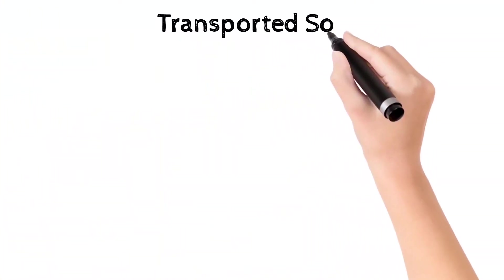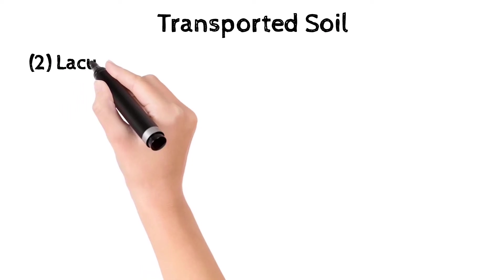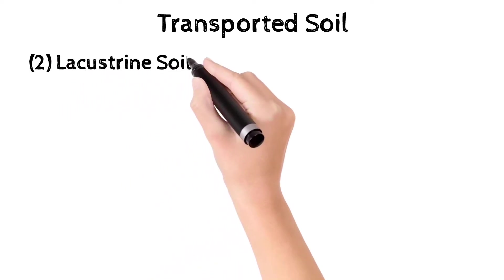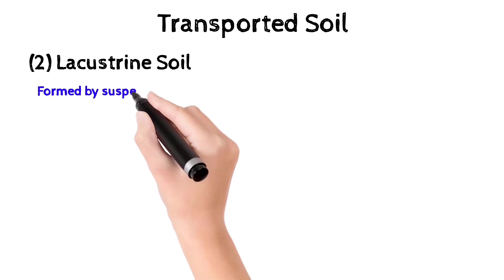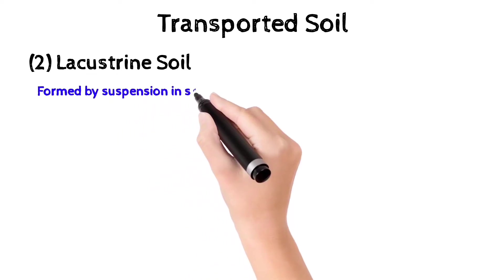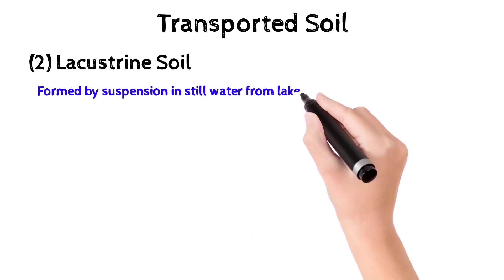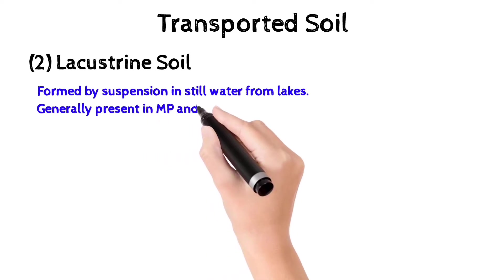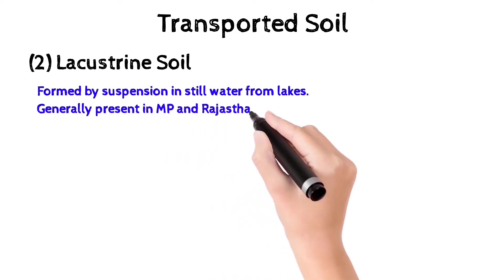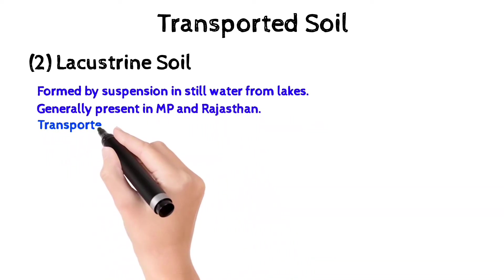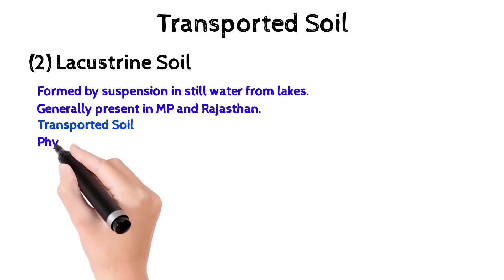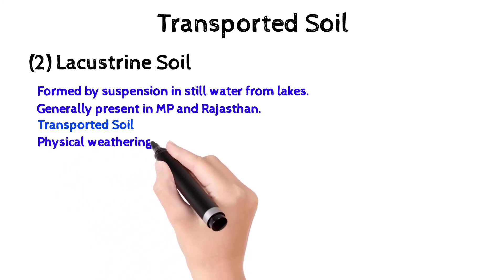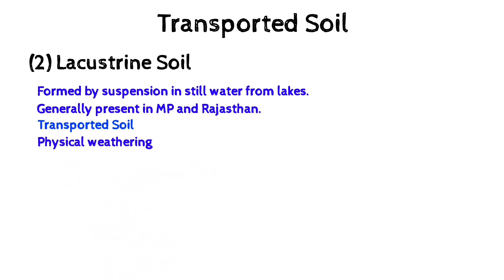The second classification of transported soil is lacustrine soil. It is formed by suspension in still water from lakes and is generally present in Madhya Pradesh and Rajasthan. It is a transported soil formed by physical weathering.